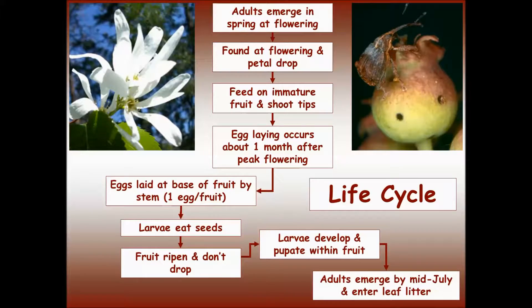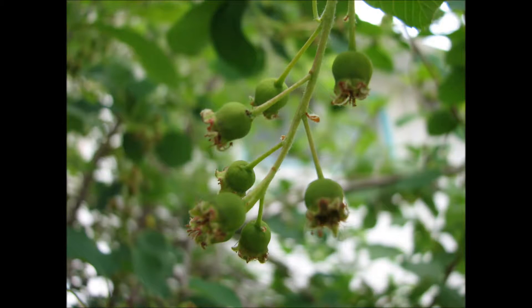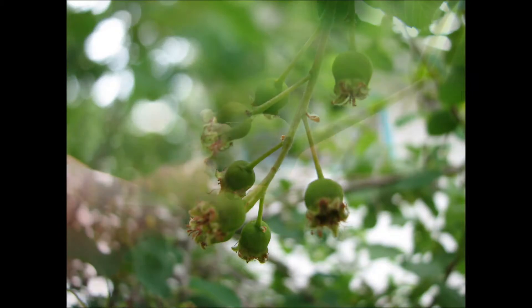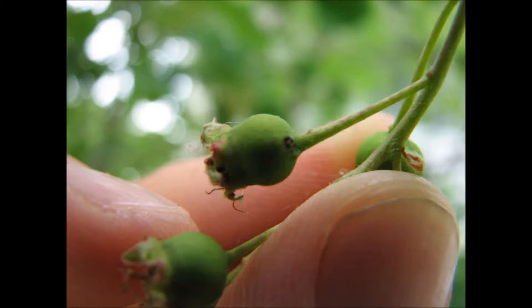They feed on immature fruit and shoot tips. At about one month after peak flowering, adults make punctures at the base of young fruit near the stem, in which they lay one egg per fruit.